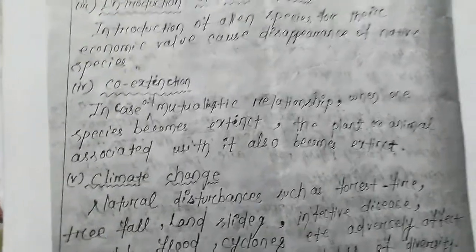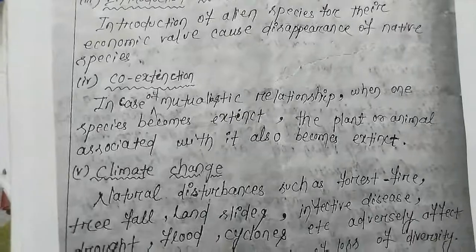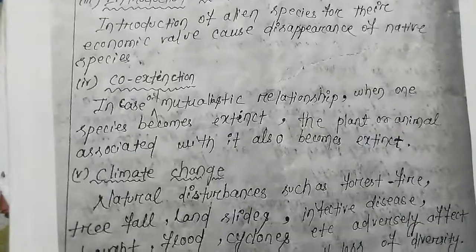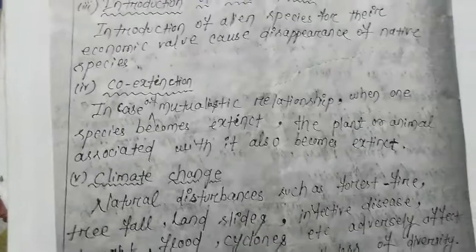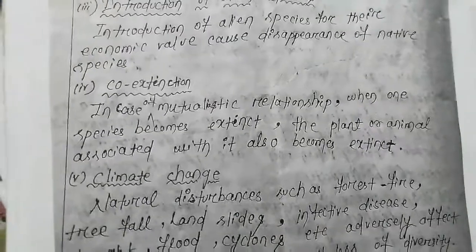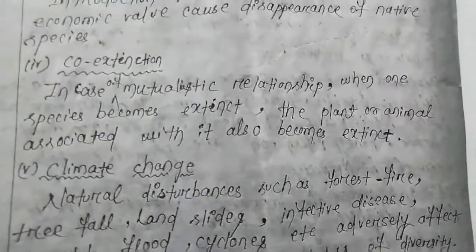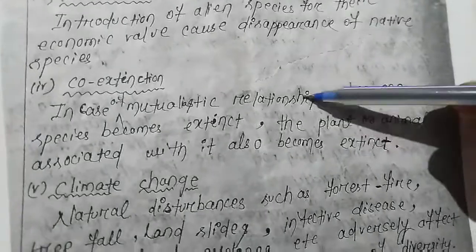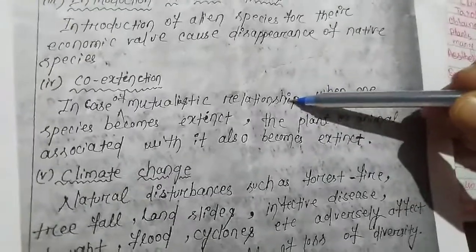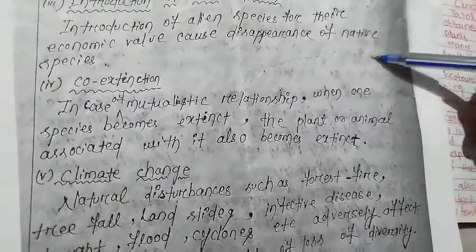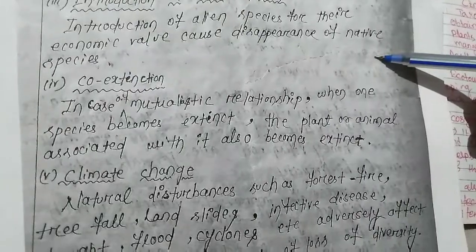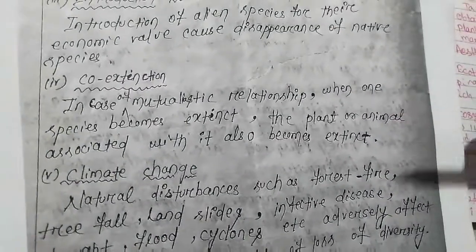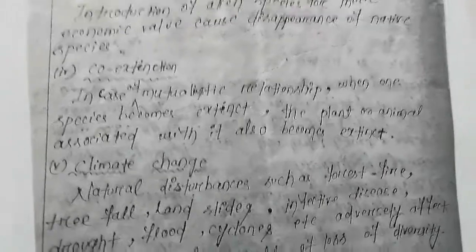If we have a mutualistic relationship with a small plant and that plant depends on another species, then if that species is lost, the small plant will also be automatically destroyed.